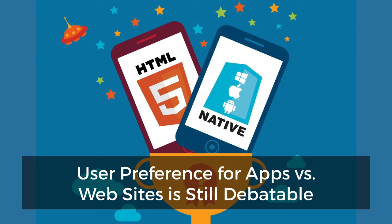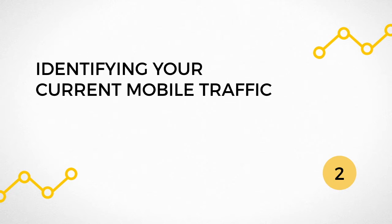So, there you go — five main differences between mobile and desktop users. Now it's time to get down to specifics. First, identifying your mobile traffic.